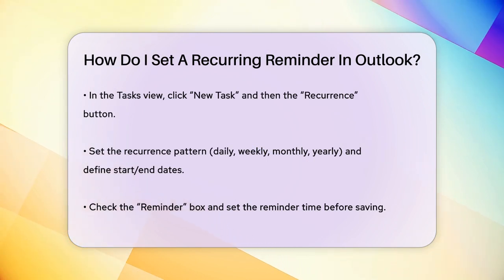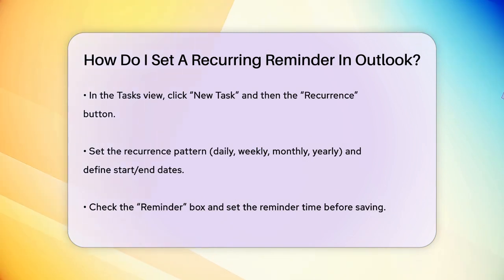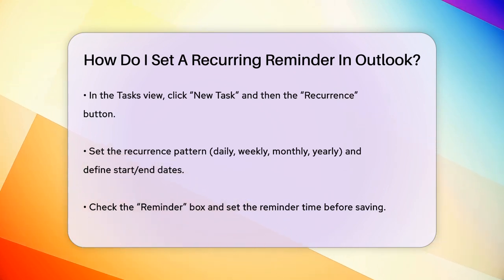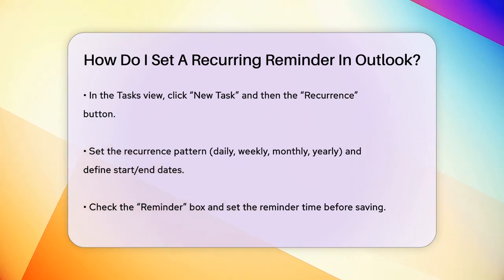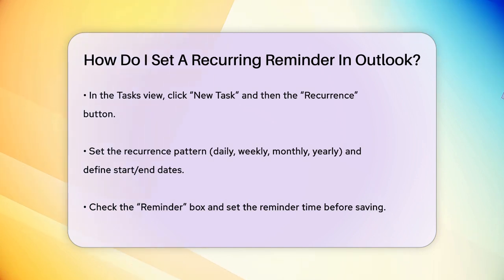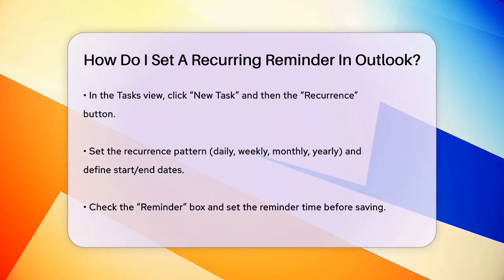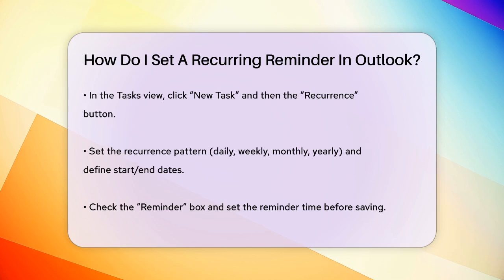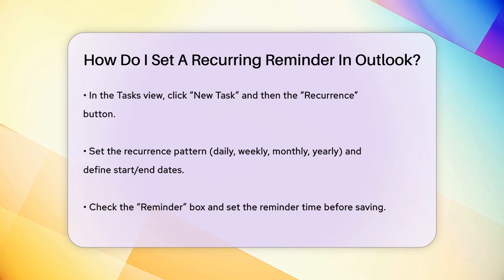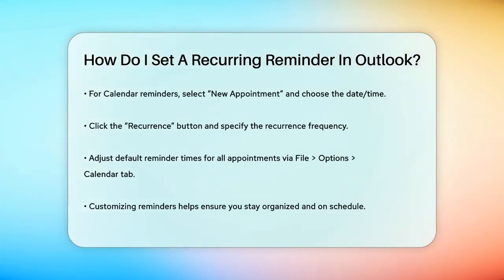If you prefer to set a recurring reminder through the calendar, it works similarly. Go to the calendar in the Navigation pane and select New Appointment. Choose the date and time for your appointment, then click the Recurrence button in the Options group. Select how often you want the appointment to recur—daily, weekly, monthly, or yearly—and set the specifics for when you want it to recur. For example, if it's a monthly recurrence, you can choose to repeat it on the same day of the month every month. Set the start and end dates and click OK. Finally, click Save and Close to save the appointment with the recurring reminder.